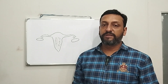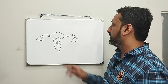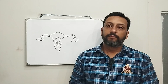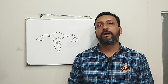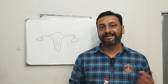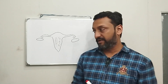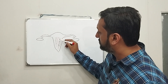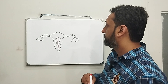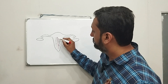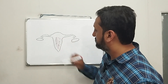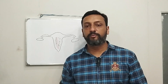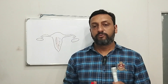Starting with the uterus: the appearance of the endometrium depends on the menstrual phase the female is in. During the mid-cycle, the endometrium gives a trilaminar appearance — it appears as three lines with a central anechoic component. This is the normal appearance. When measuring endometrial thickness in this case, we skip the central fluid-filled part.